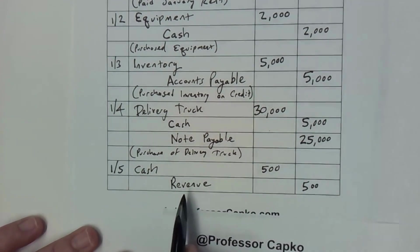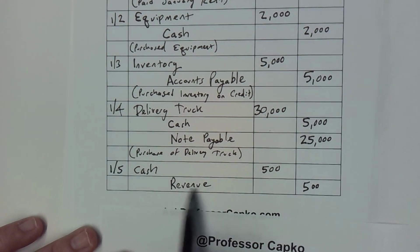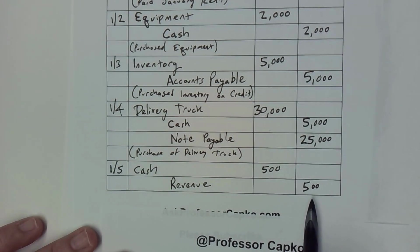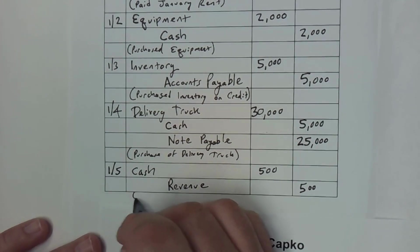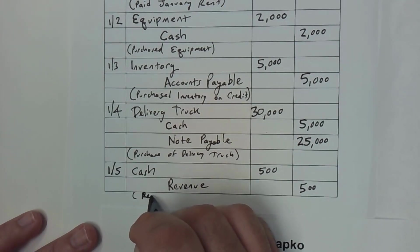And it might be more specific — it might say service revenue, it might be sales revenue. So some of these accounts might have slightly different names; be on the lookout for that. But we know it's some sort of revenue account for $500. So we have our debits and credits balance, and this is for the repair services provided.